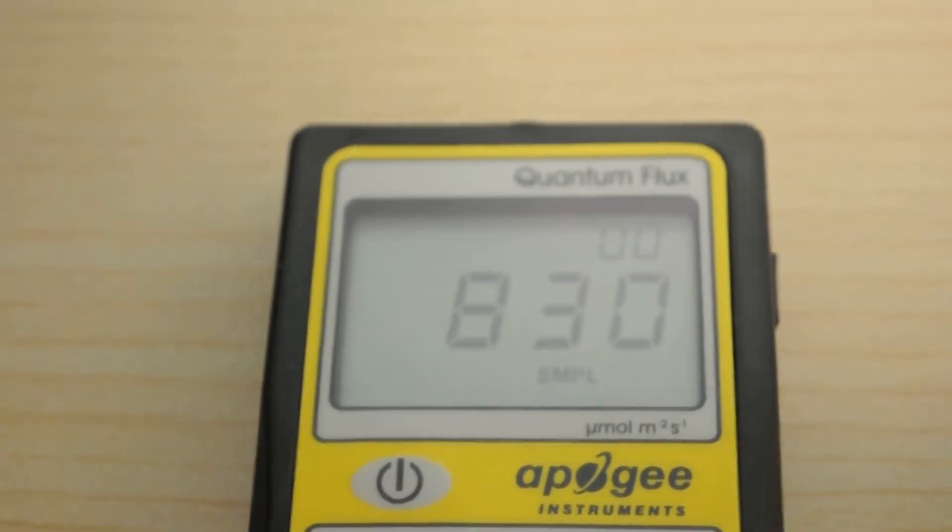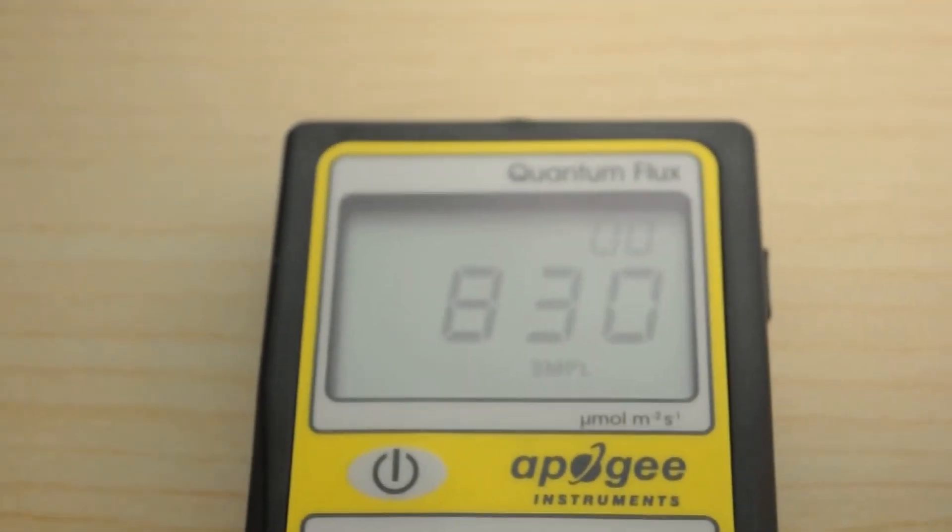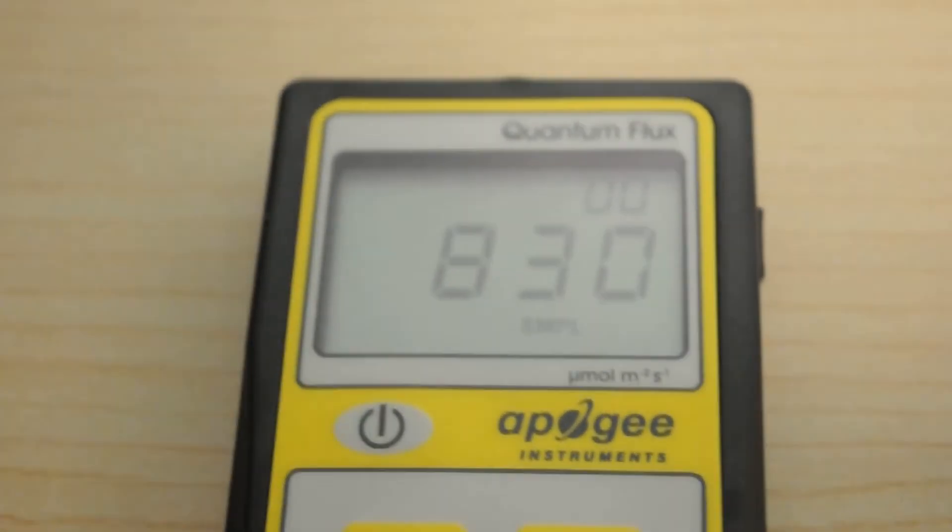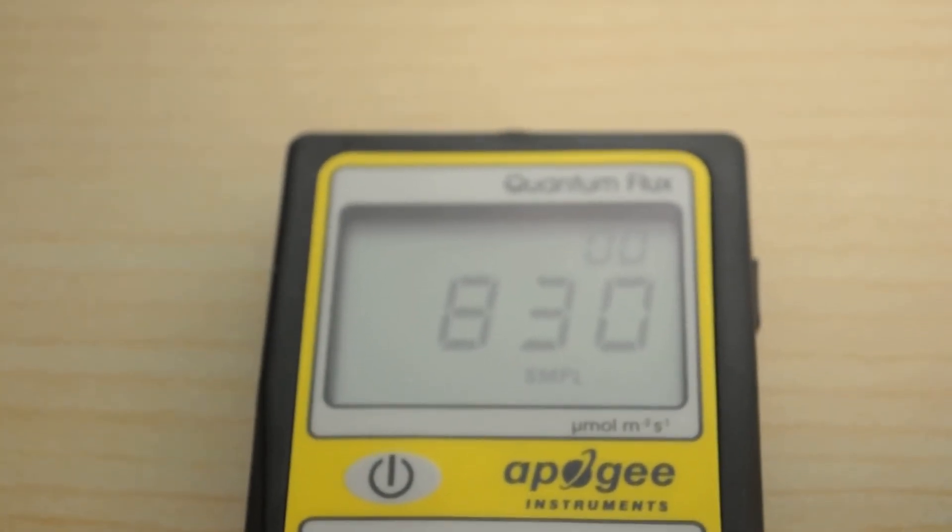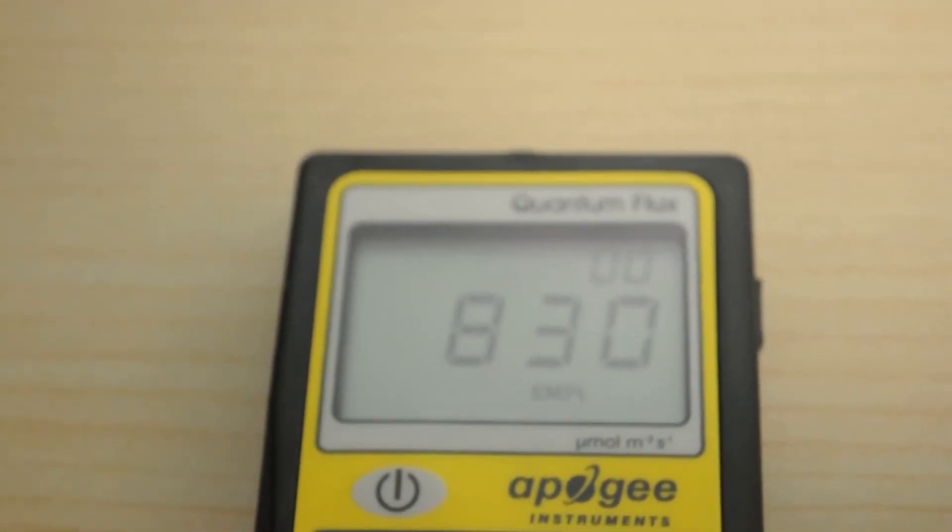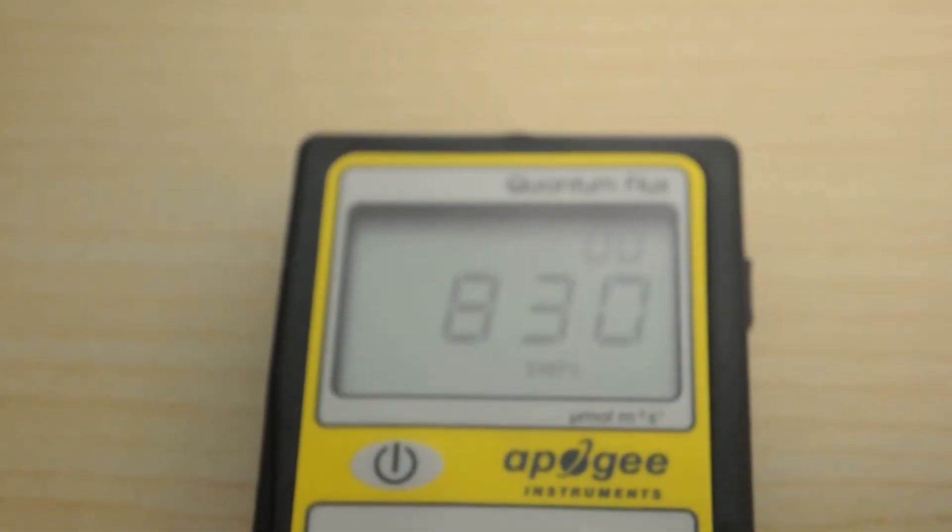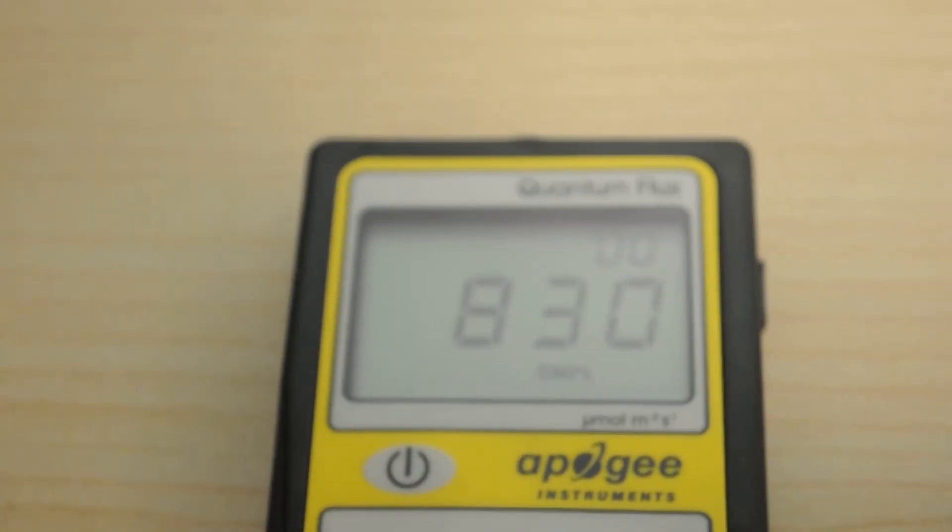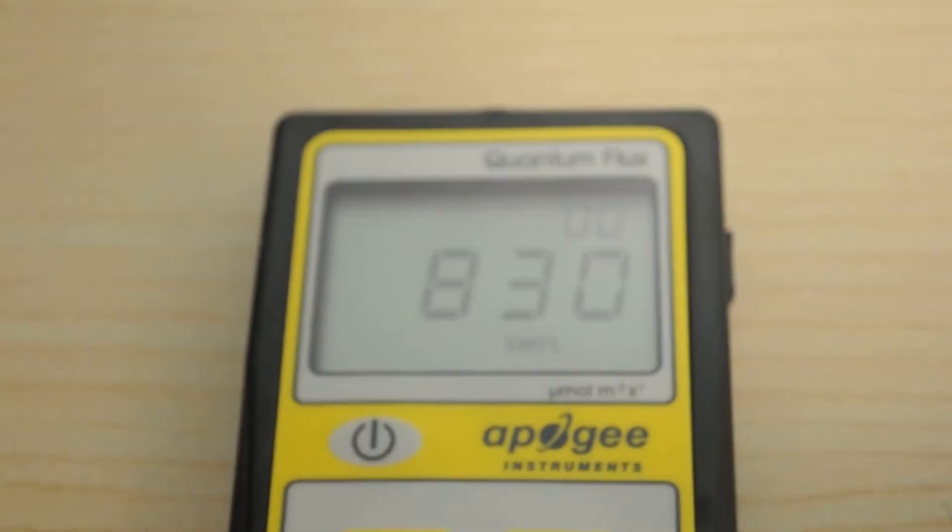Okay, there it is, 830. That's dead center, 12 inches for the Spider Farmer SF-1000. I'll complete the full PPFD grid, we'll post that. We'll also post the test lab review sheet. We'll take a look at the watt meter to see what the actual watt usage is, and then we'll go ahead and wrap this one up.